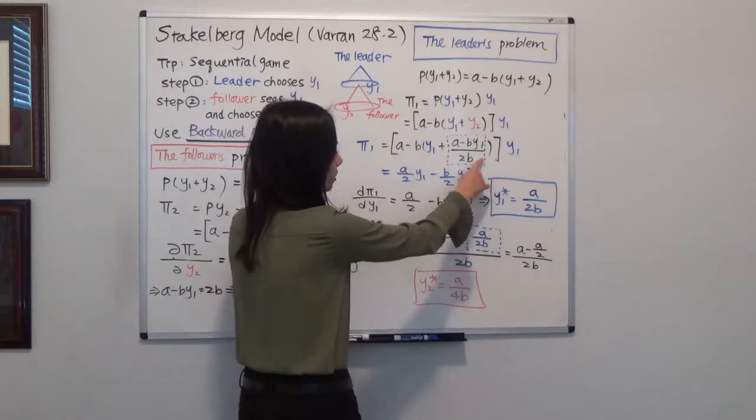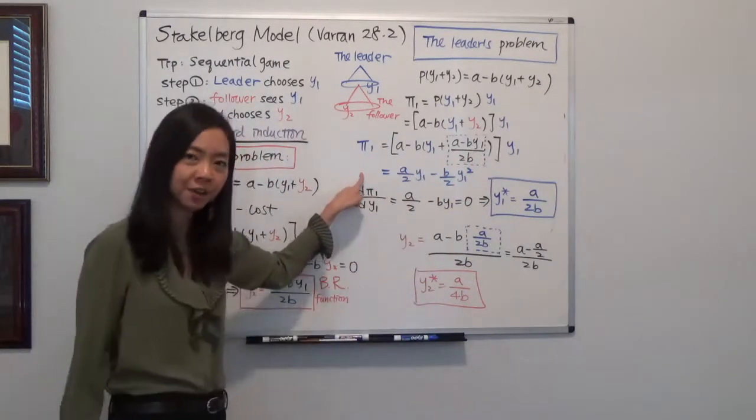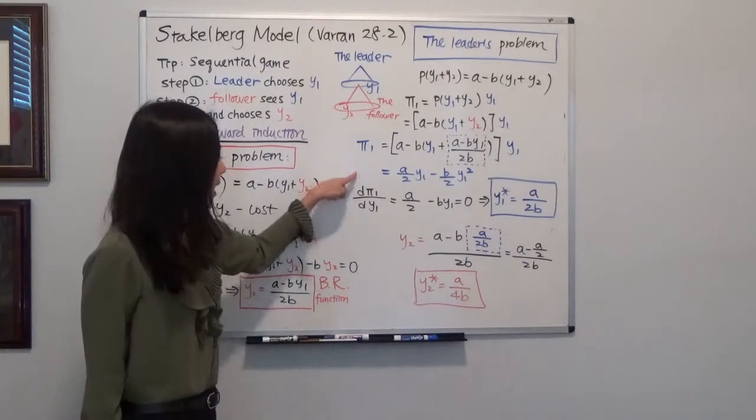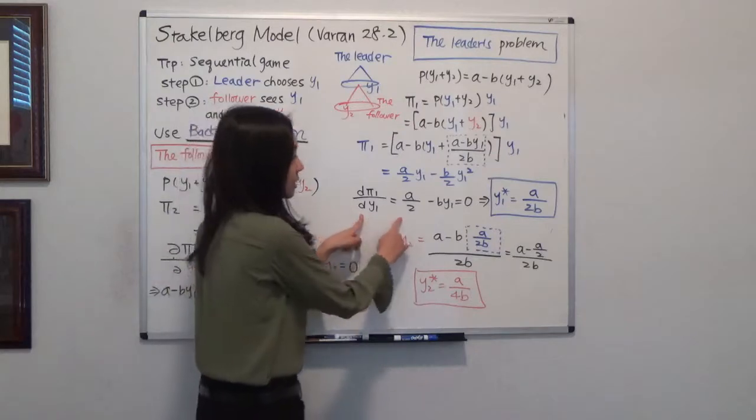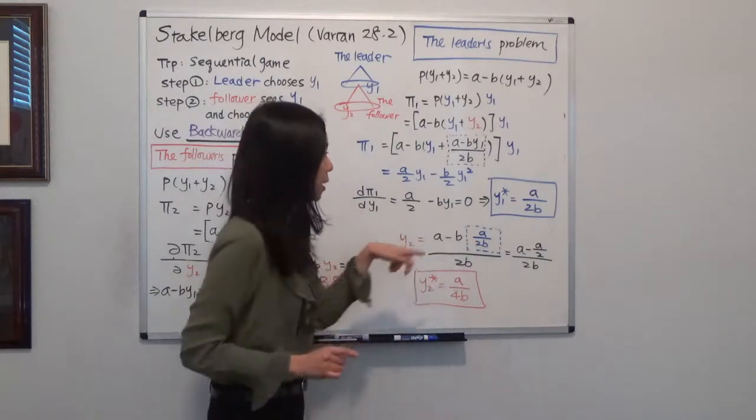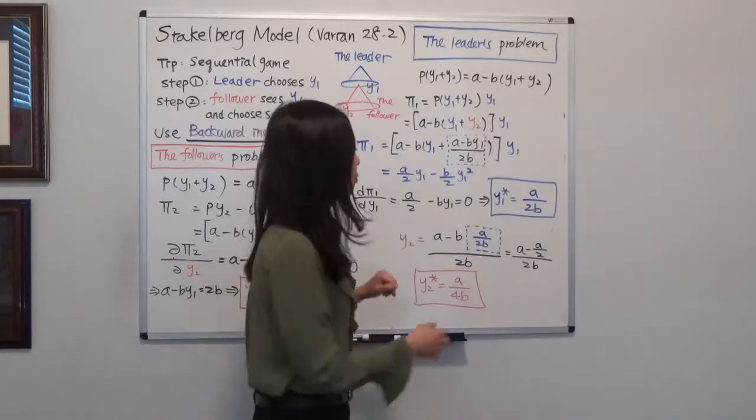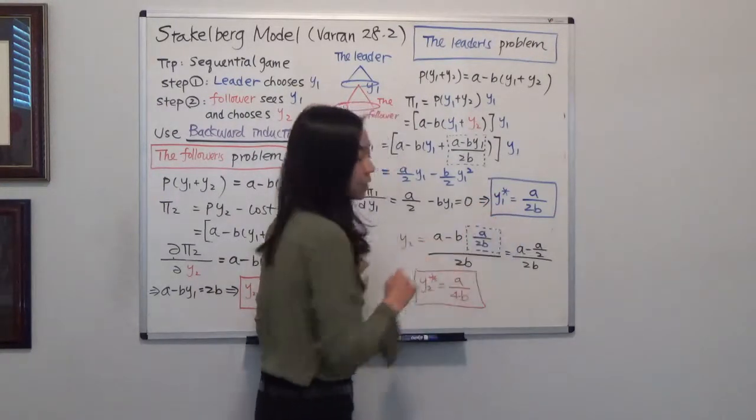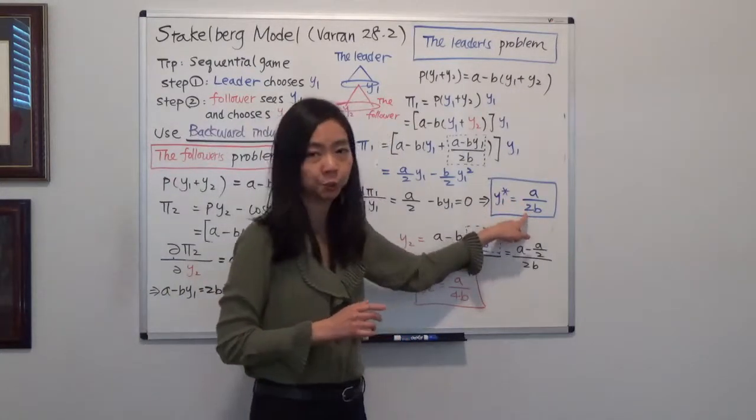The rest is just algebra. We multiply that out. So that's our profit function. Take the profit with respect to quantity Y1 and set it equal to zero. Then we get Y1 star is equal to A divided by 2B. So firm one already knows how much it's going to produce. It is going to produce A divided by 2B.